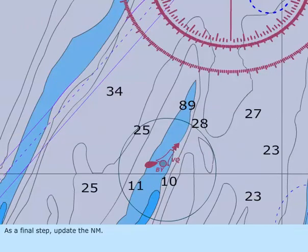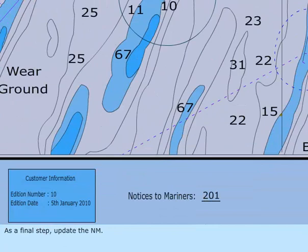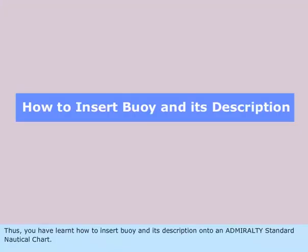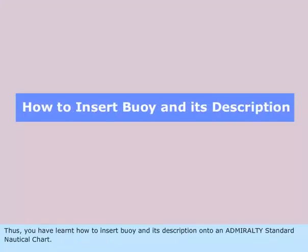As a final step, update the NM. Thus, you have learned how to insert a buoy and its description onto an Admiralty Standard nautical chart.